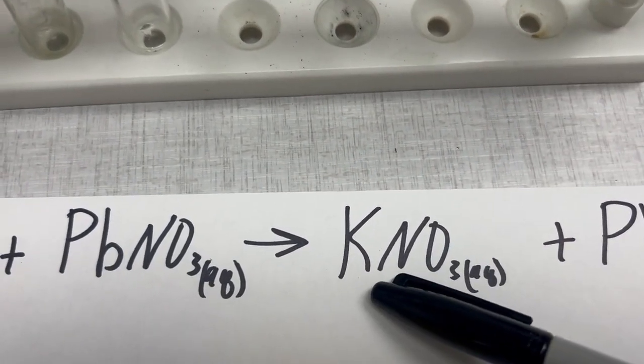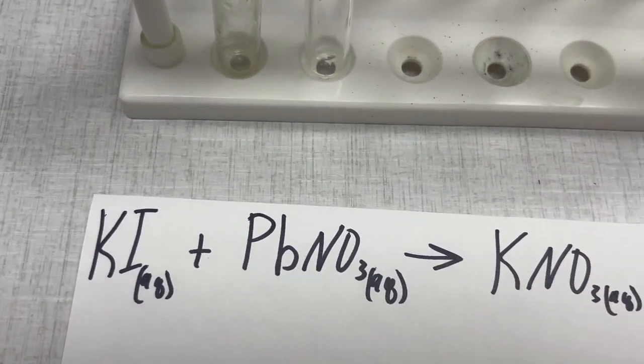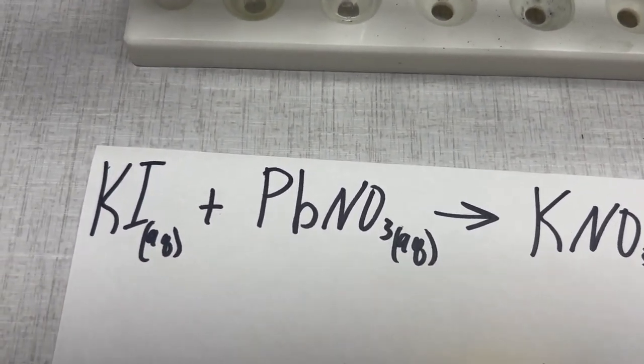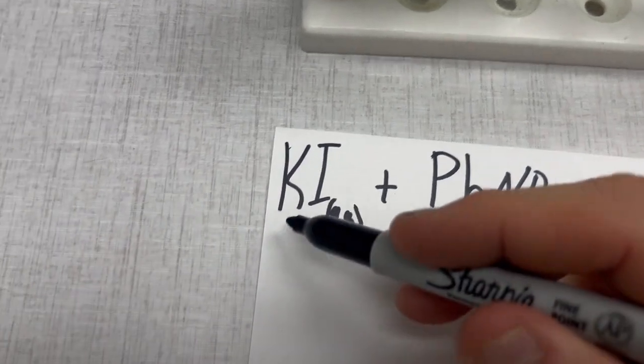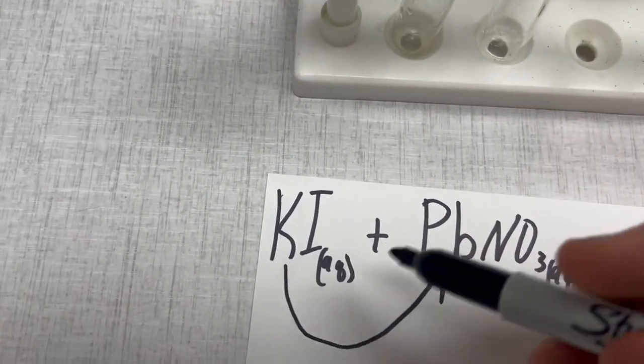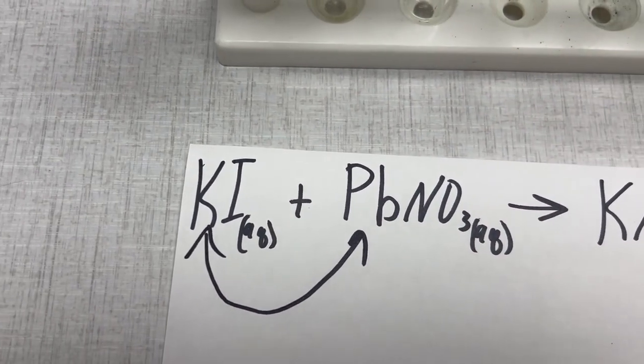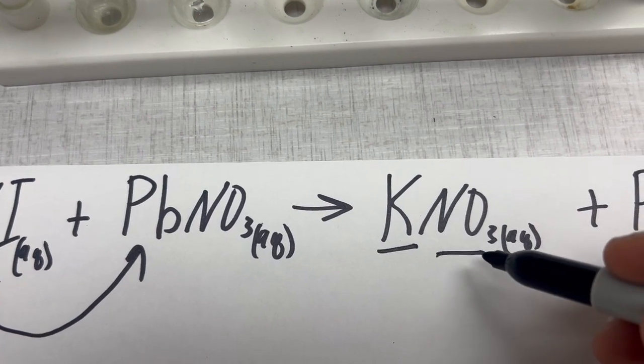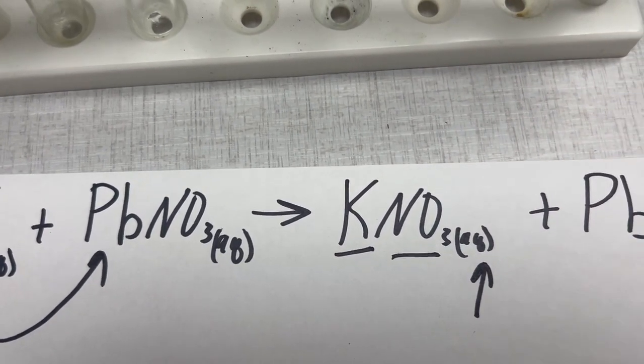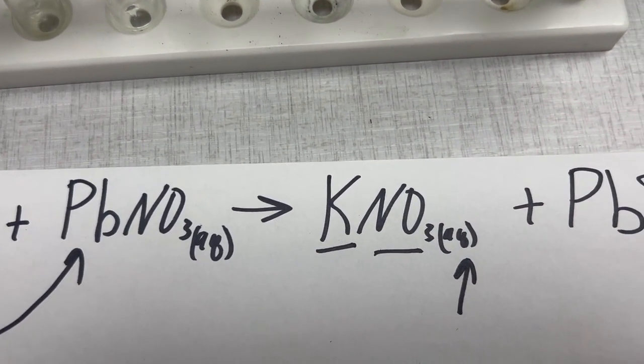And then what we made is we made a switch. So our potassium and our lead, they switched places. The two metals switched places, so then the potassium or the K ended up with the nitrate. That actually stayed in solution, so that was still liquid in solution.